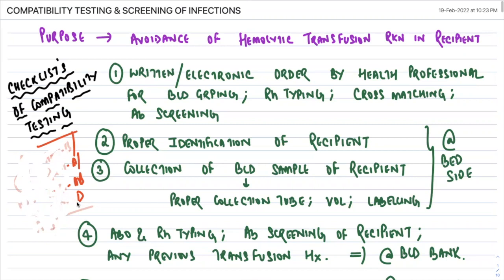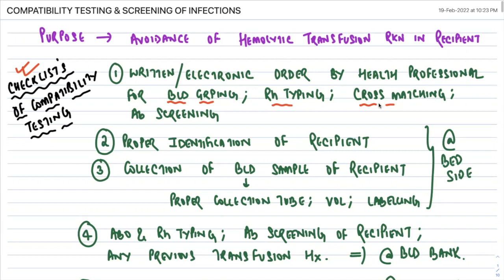Cross-matching is the final testing done before issuing a blood sample. The checklist for compatibility testing starts with a written or electronic order by the concerned doctor or health professional. The order should specify blood grouping, Rh typing, cross-matching, antibody screening, which blood component is required, and must carry the signature of the healthcare professional.